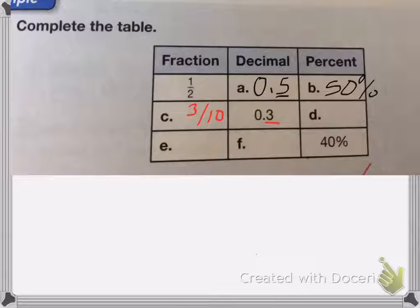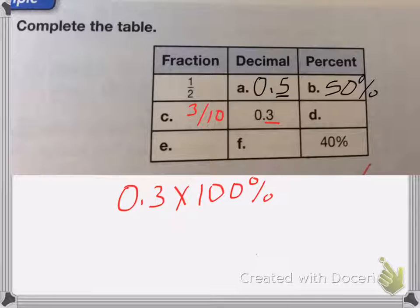Now I need to change it into a percent. So I can do that by multiplying 0.3 times by 100%. That means I'm going to move this decimal place over twice. So it's going to be 30%. Okay, 1, 2, add my 0.